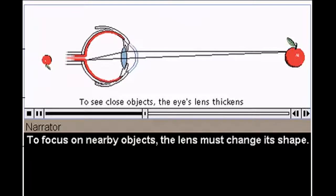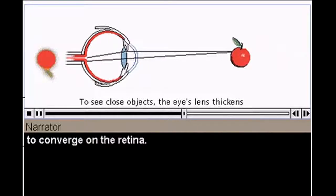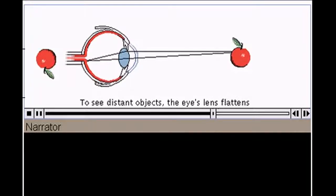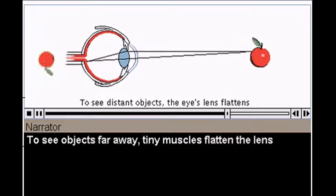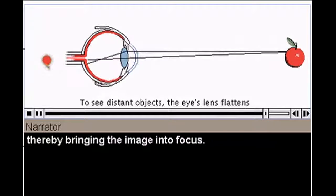To focus on nearby objects, the lens must change its shape. It thickens, causing light rays from the object to converge on the retina. To see objects far away, tiny muscles flatten the lens, thereby bringing the image into focus.